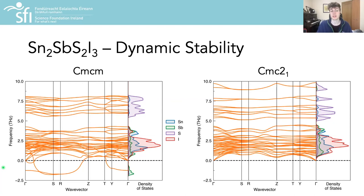So the structure can spontaneously distort to form a lower symmetry, lower energy arrangement, in this case the non-centrosymmetric Cmc2₁ phase, which is dynamically stable and has no imaginary modes in its phonon dispersion.